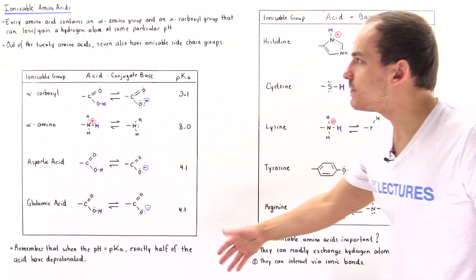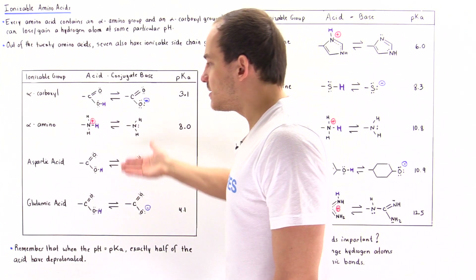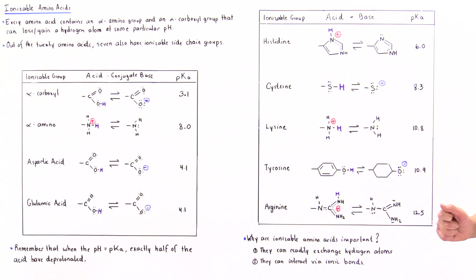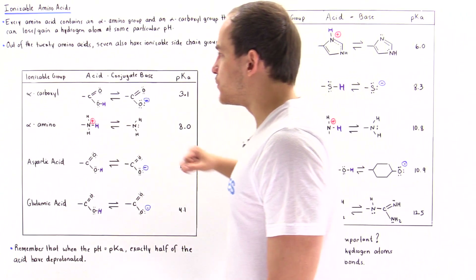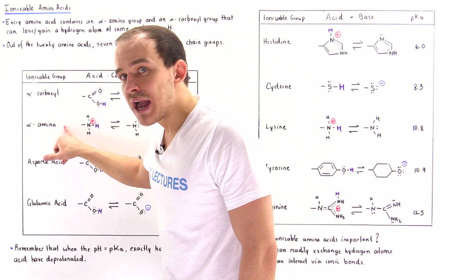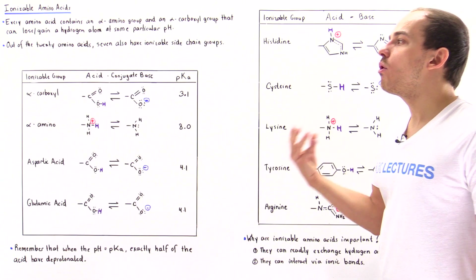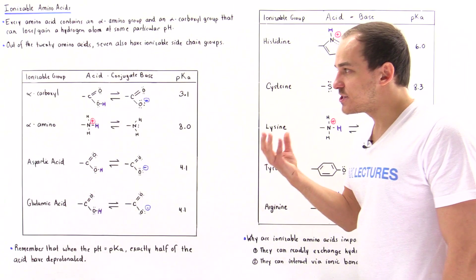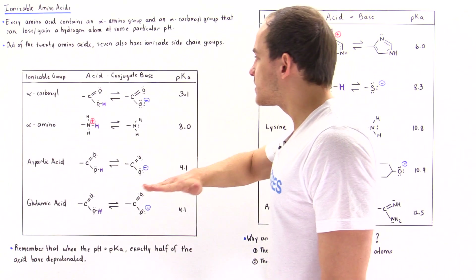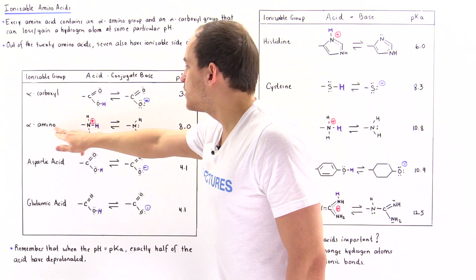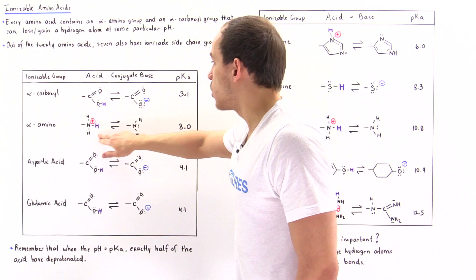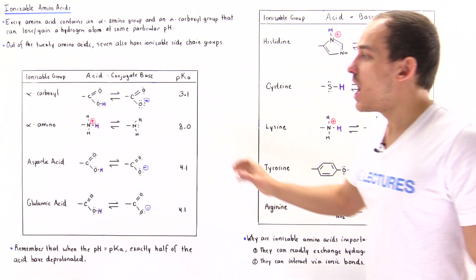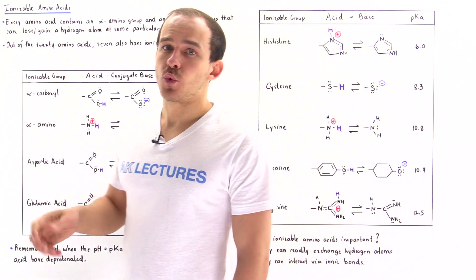These are the seven ionizable amino acids — they are ionizable because their sidechain groups can lose or gain H atoms at specific pH values. All 20 of our amino acids contain an alpha-carboxyl group and an alpha-amino group, so technically, at specific pH values, all amino acids can gain and lose H atoms. But because our body is normally at around pH 7, the alpha-carboxyl is usually negatively charged and the alpha-amino is usually positively charged, and these two charges cancel one another out. The actual charge on that amino acid therefore depends on the charge on its sidechain group.